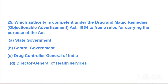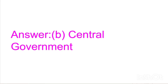Next question: Which authority is competent under the Drugs and Magic Remedies (Objectionable Advertisements) Act, 1954 to frame rules for carrying out the purpose of the act? Option A: State Government, Option B: Central Government, Option C: Drug Controller General of India, Option D: Director General of Health Services. Answer is Option B, Central Government.